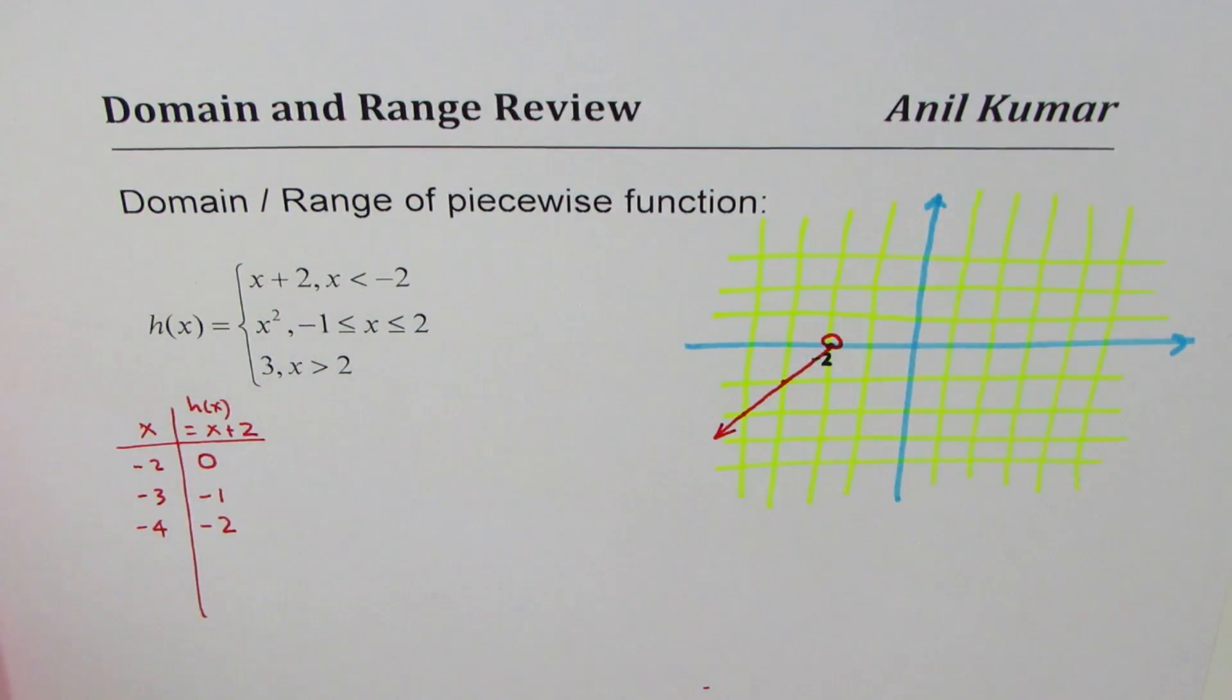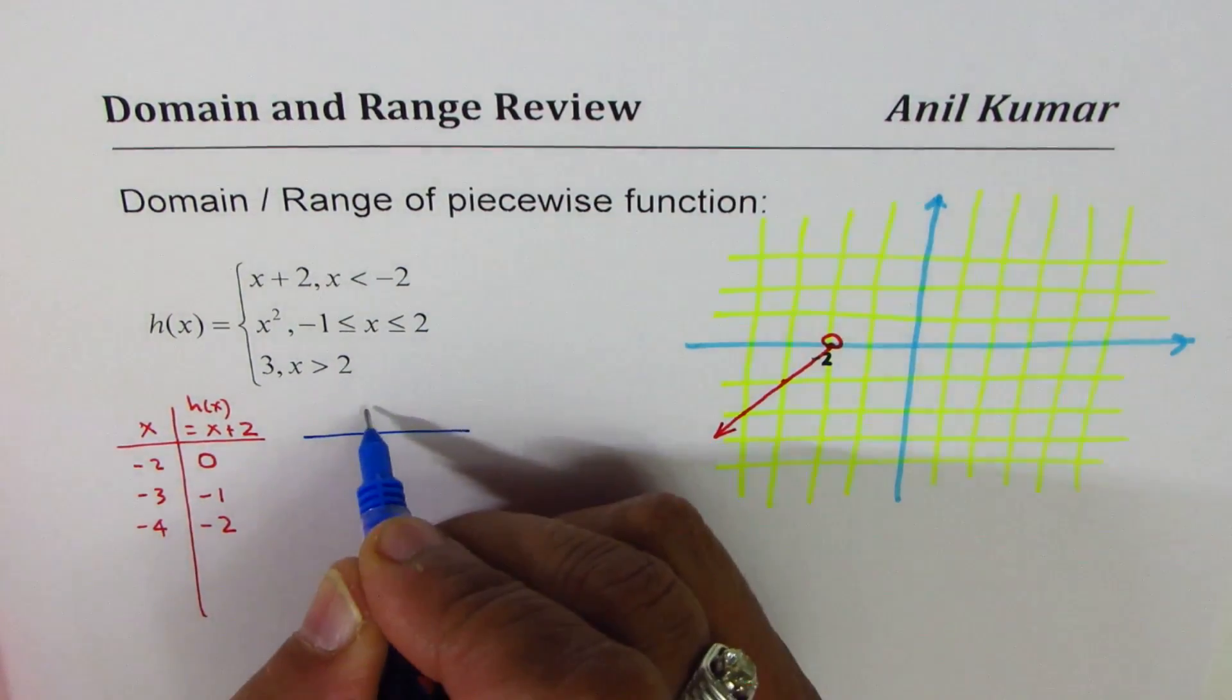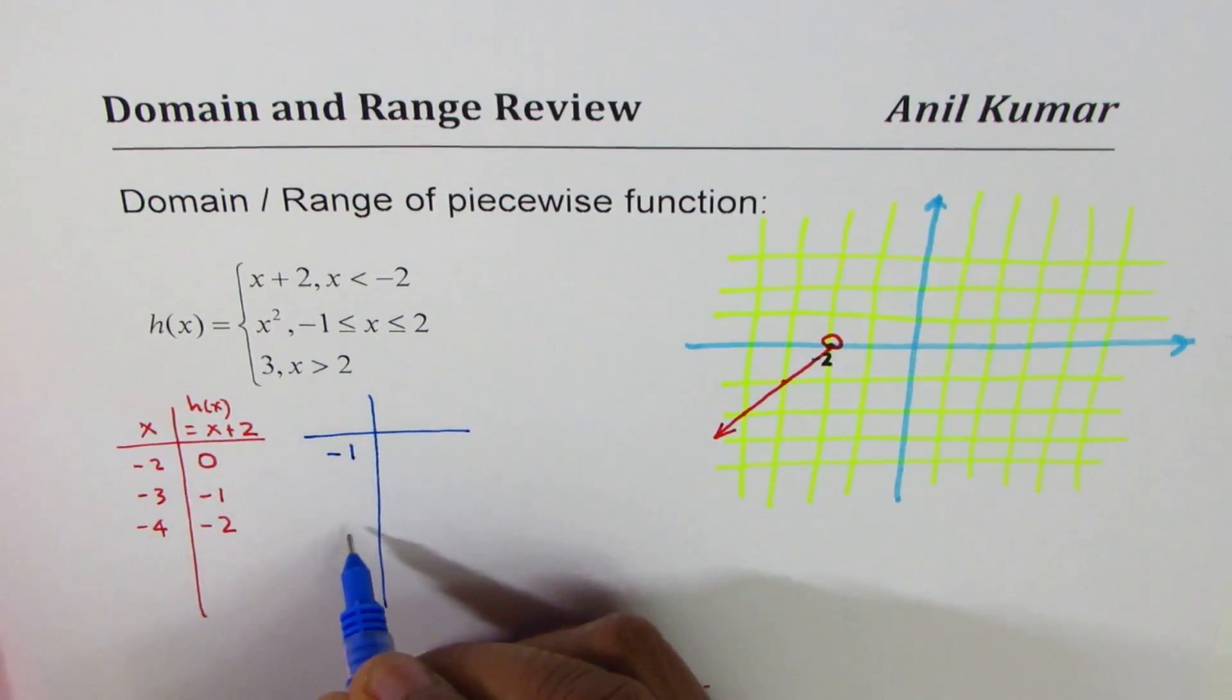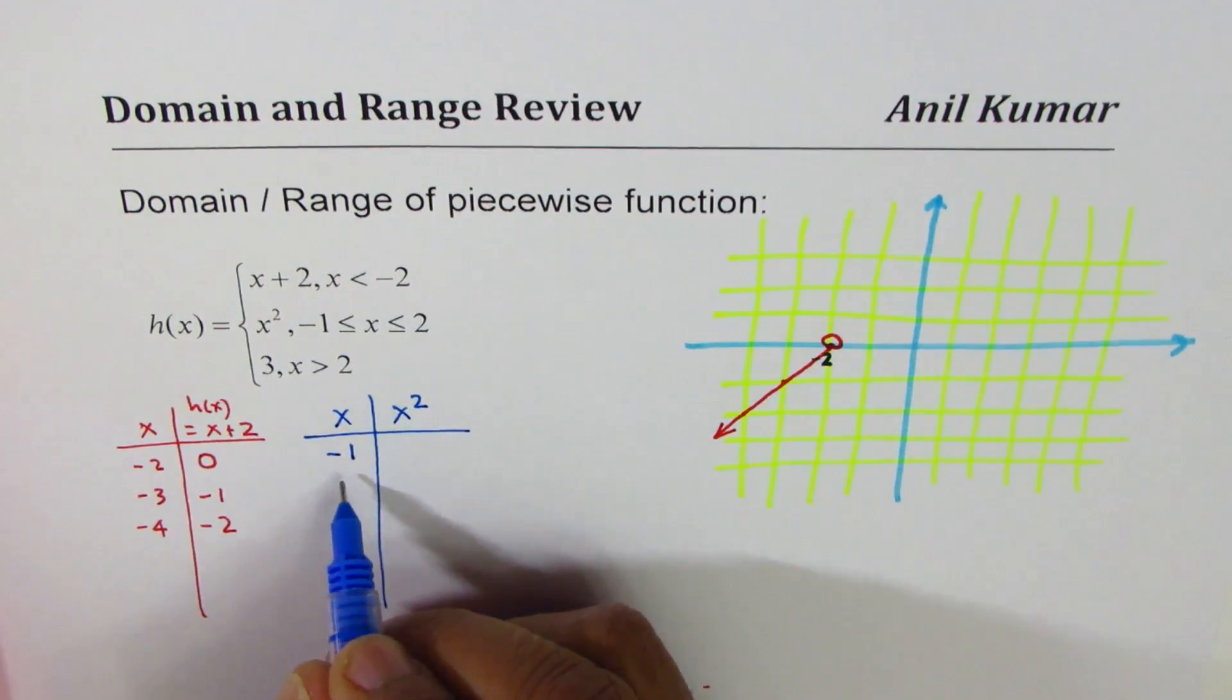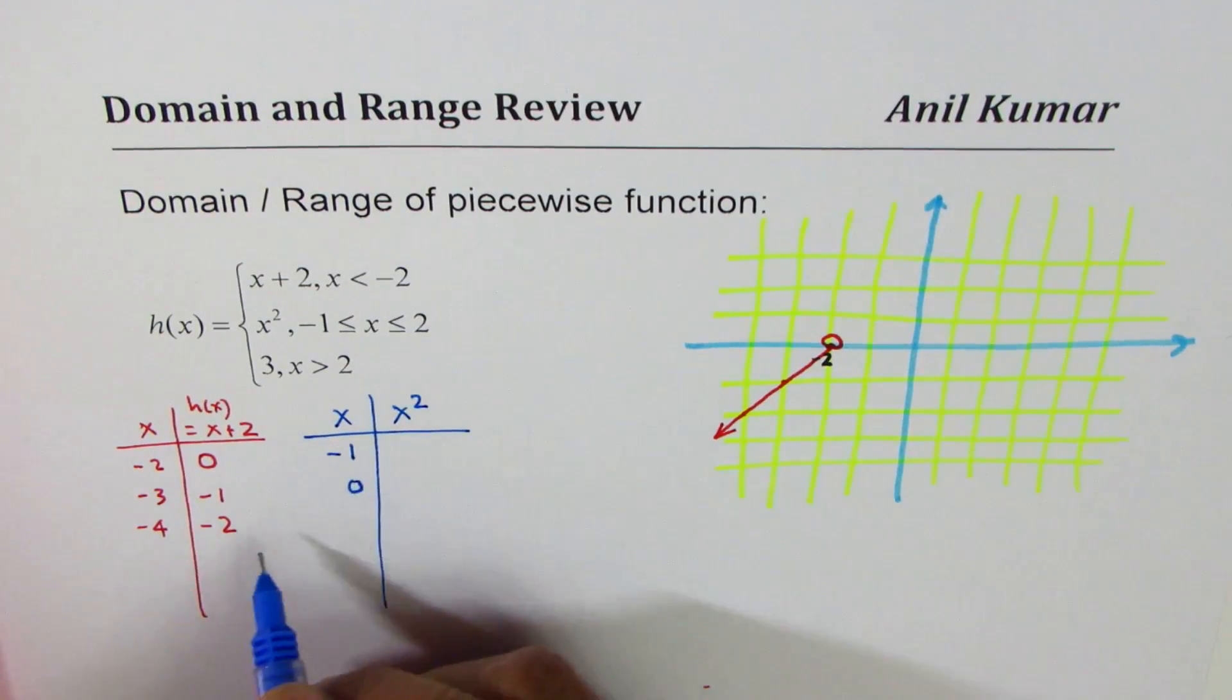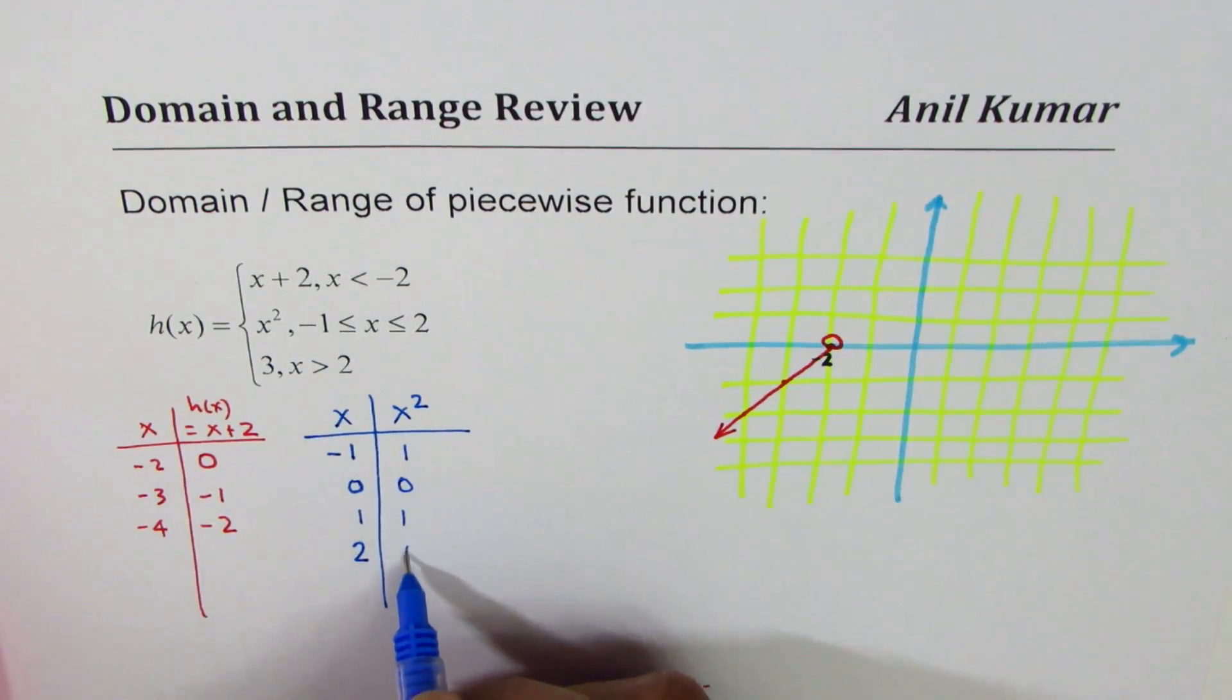Now, the second piece here is x squared from minus 1. These are the x values, and the function is x squared. So between minus 1 and 2, we could take values like 0, 1, and 2. Square is positive. So we get these values.